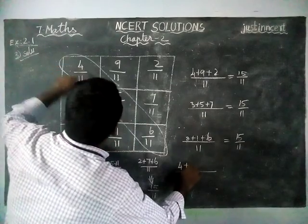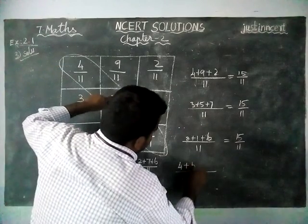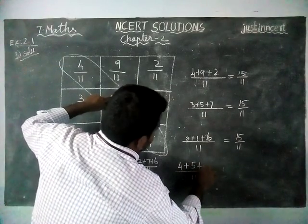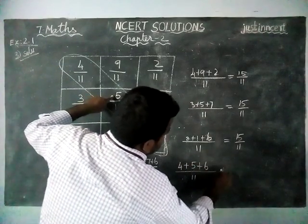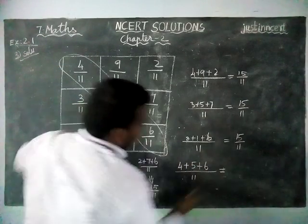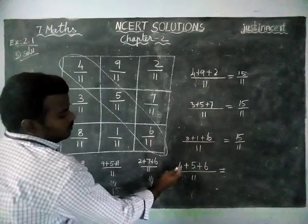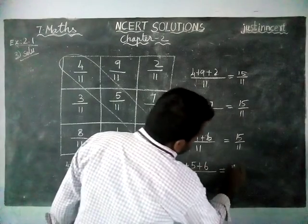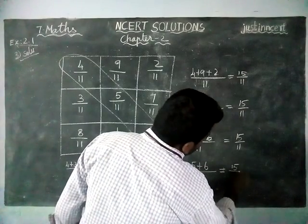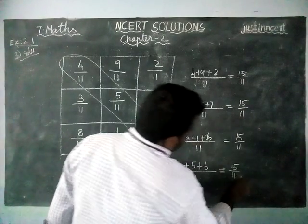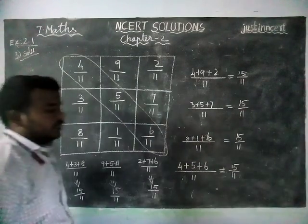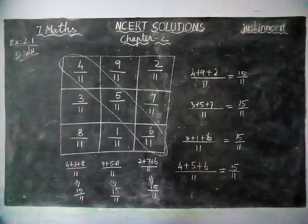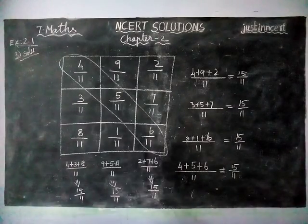4 plus 5 plus 6 is equal to 9, 9 plus 6 is equal to 15 by 11. So one diagonal is verified.